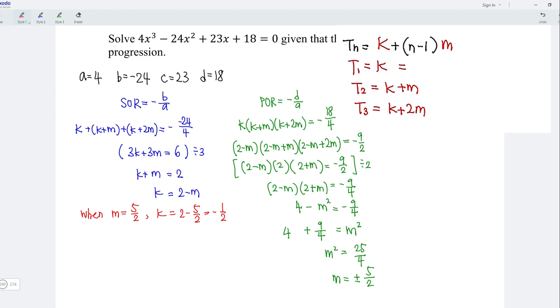If the first term is equal to negative 1 over 2, which means that the second term is equal to negative 1 over 2 plus 5 over 2, which is equal to 2. While the third term is equal to negative 1 over 2 plus 2 times 5 over 2. And this equal to 9 over 2.